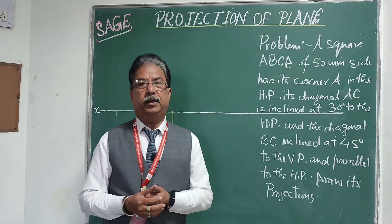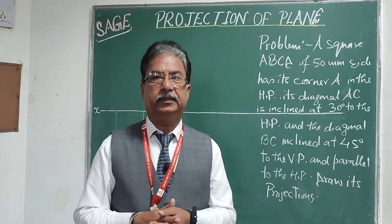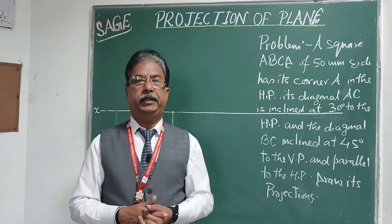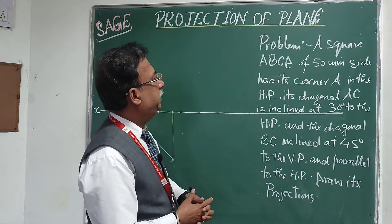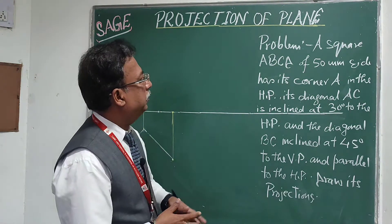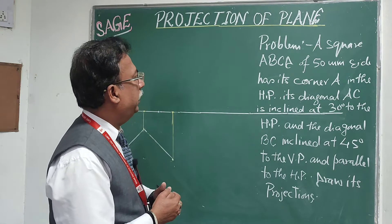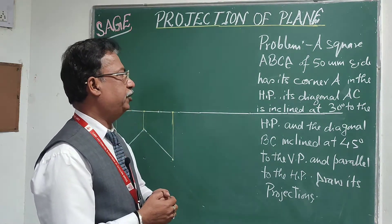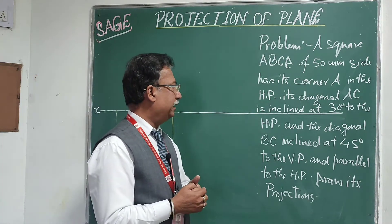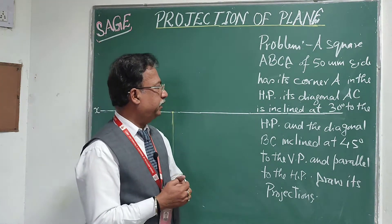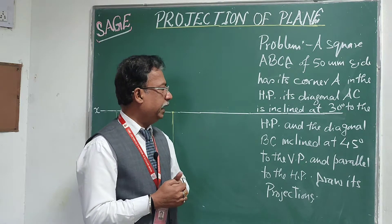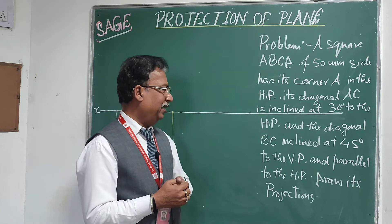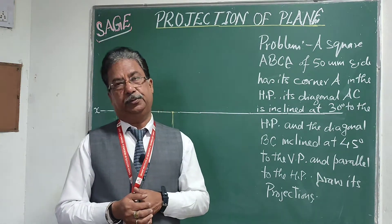Welcome again to another lecture on projection of planes. The problem is: a square ABCD of 50mm side has its corner A in the HP, its diagonal AC is inclined at 30 degrees to the HP, and the diagonal BD is inclined at 45 degrees to the VP and parallel to the HP. Draw its projections.